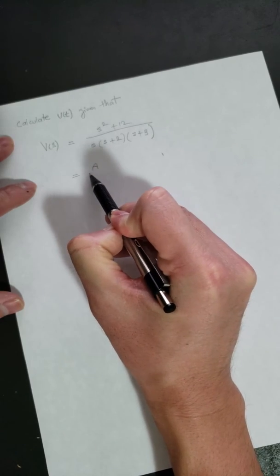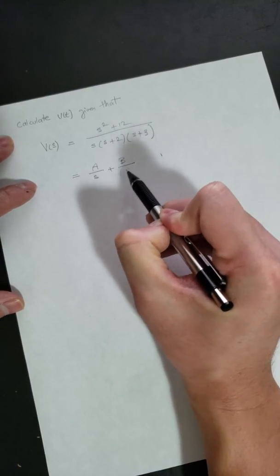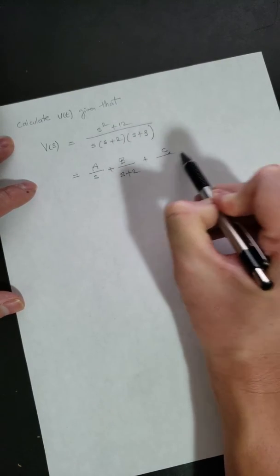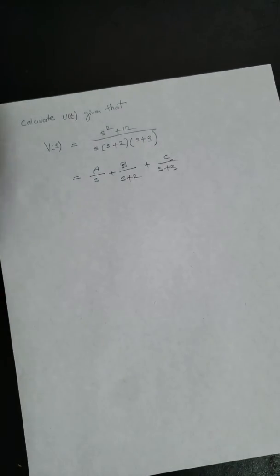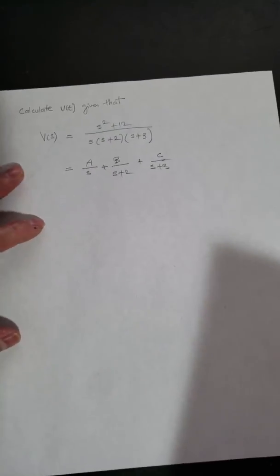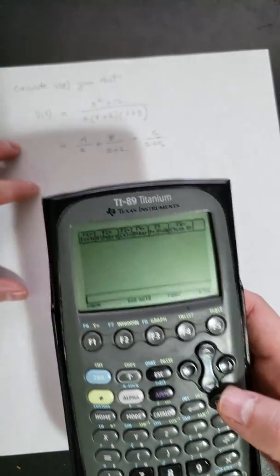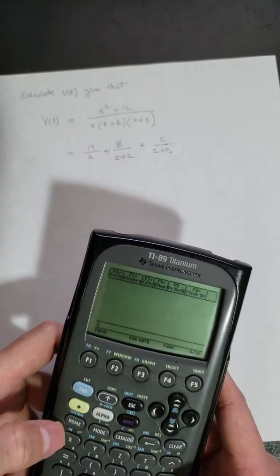The general form is A/s plus B/(s+a) plus C/(s+b), sometimes even plus D plus E. I would hate to be in that class. So what you do is you turn it on and type down the function. Instead of using s, I'm going to use x, it's the same thing.